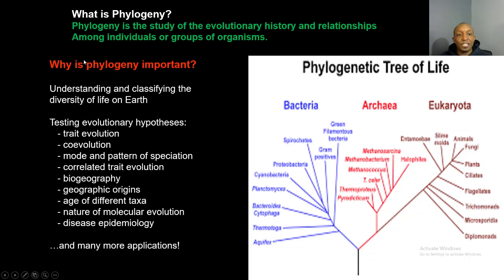What is phylogeny? Phylogeny is the study of the evolutionary history and relationships among individuals or groups of organisms. Phylogeny is important because it helps with understanding, classifying, and studying the diversity of life on Earth.